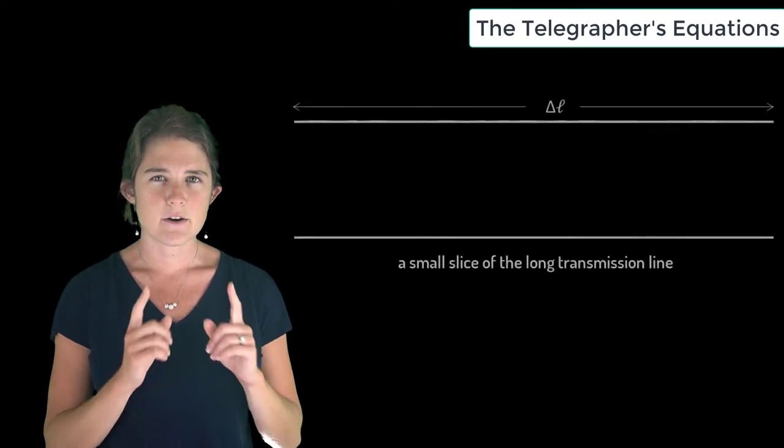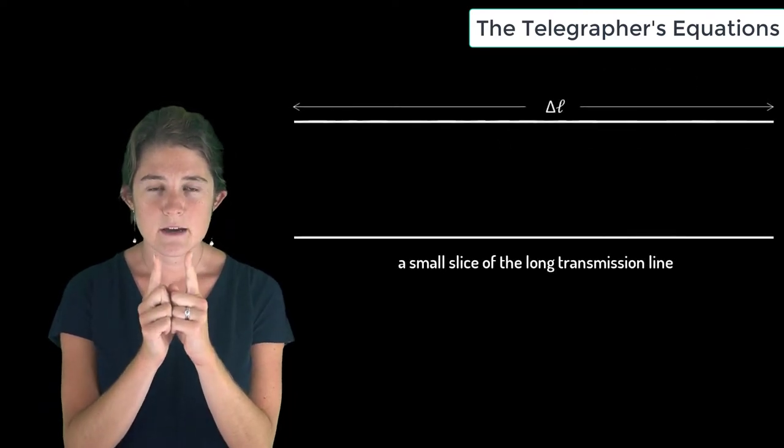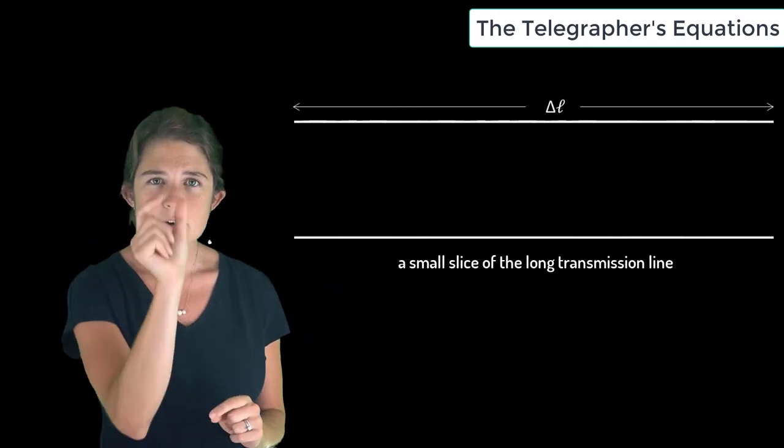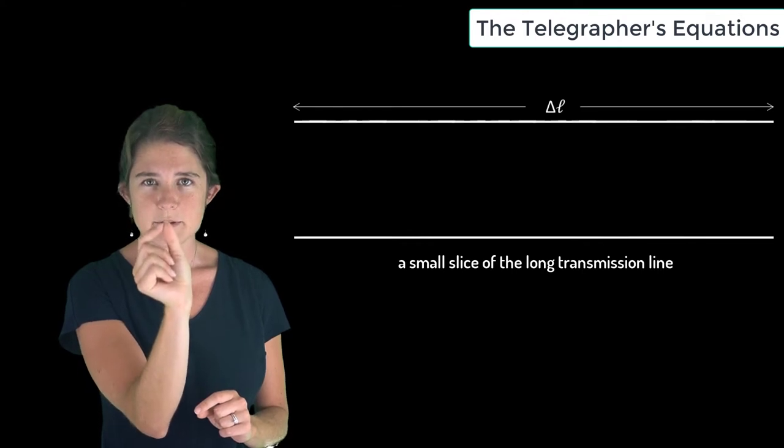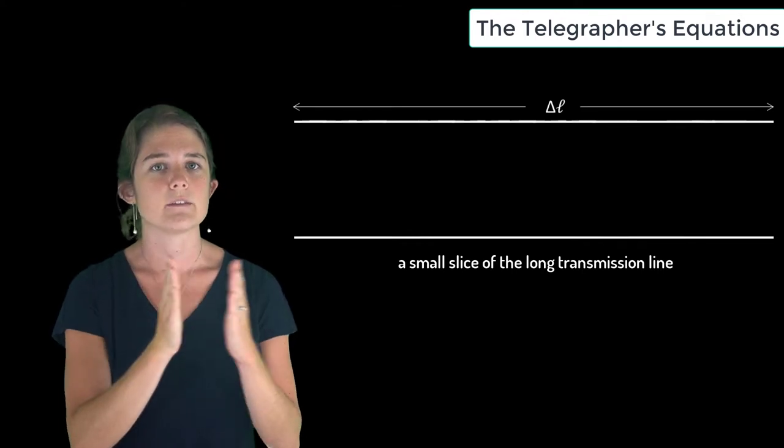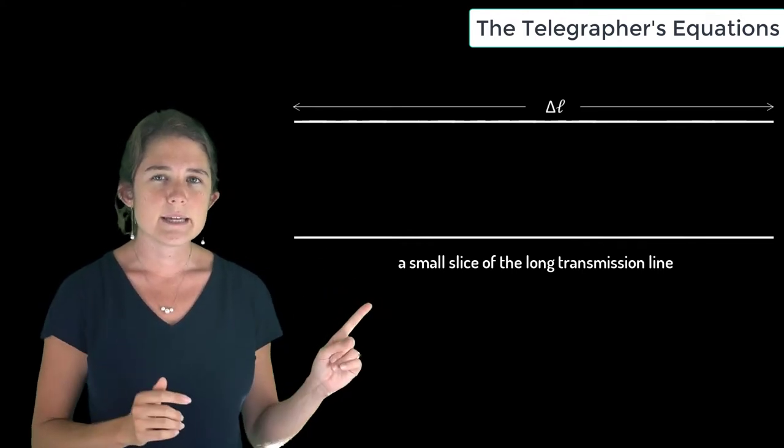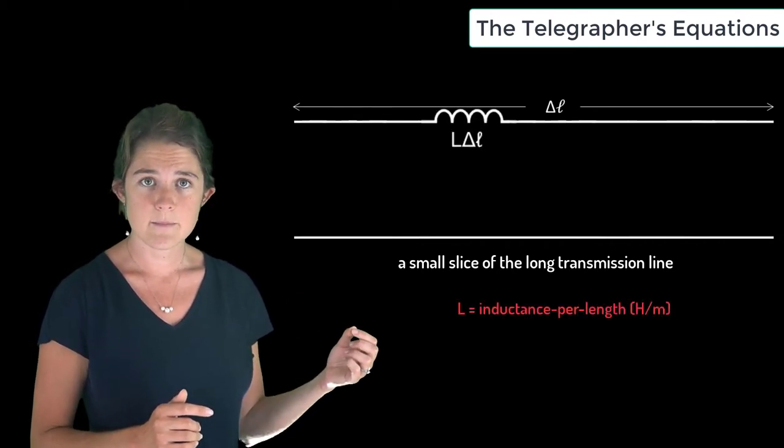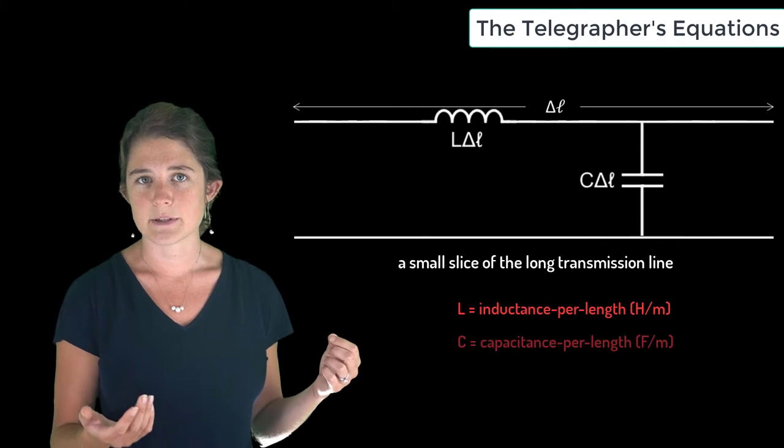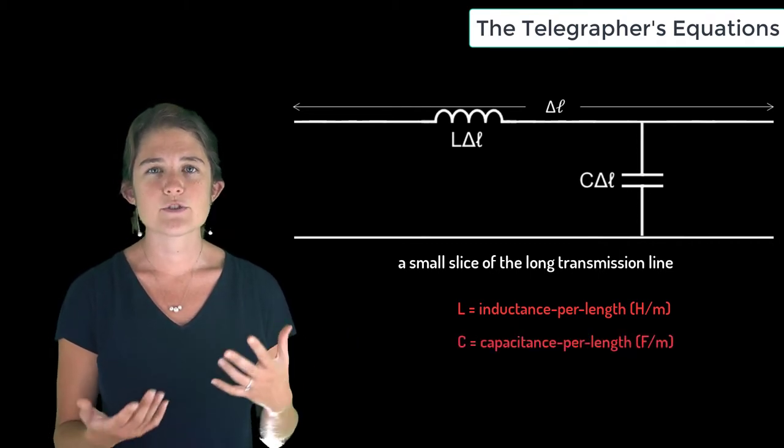Let us consider a very small slice of the long transmission line. This small slice will have length Δℓ, where Δℓ is defined to be very small relative to the wavelength of the signal. This piece of transmission line will have some inductance per length L and some capacitance per length C.